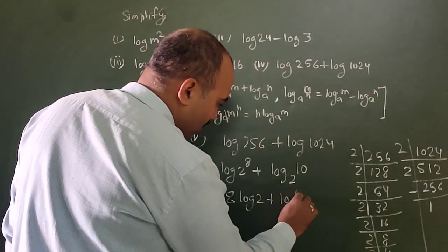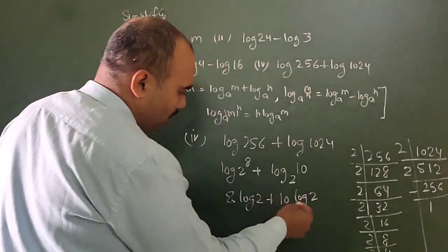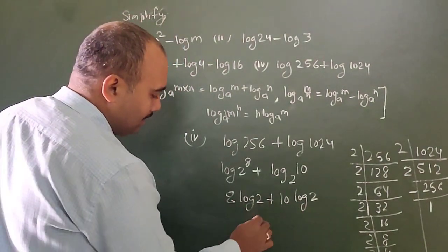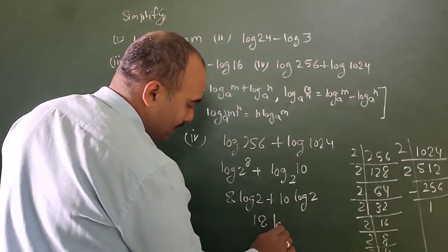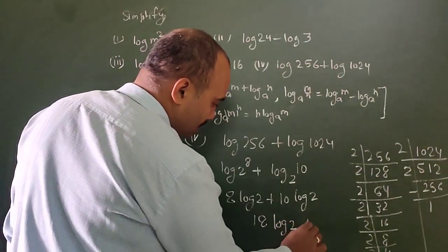Log 2 is the same in both, we can take it common. So 10 plus 8 equals 18. I'm writing it clearly: 18 log 2. This is your answer.